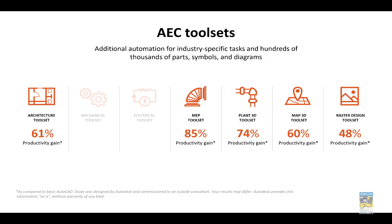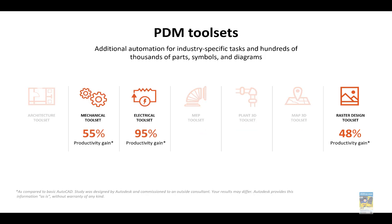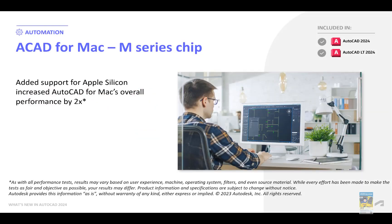Looking at the AEC tool sets, there are significant percentage increases across the different verticals: AutoCAD Architecture, AutoCAD MEP, Plant 3D, Map 3D, and Raster Design — they all hit at least 48% productivity gain or higher. For the product design and manufacturing tool sets — mechanical, electrical, and raster design — we also see at least 48% productivity gain. We also have AutoCAD for Mac, built to handle the M-Series chips with Apple Silicon support, delivering roughly two times the performance increase. This applies to both the full and LT versions of AutoCAD 2024.